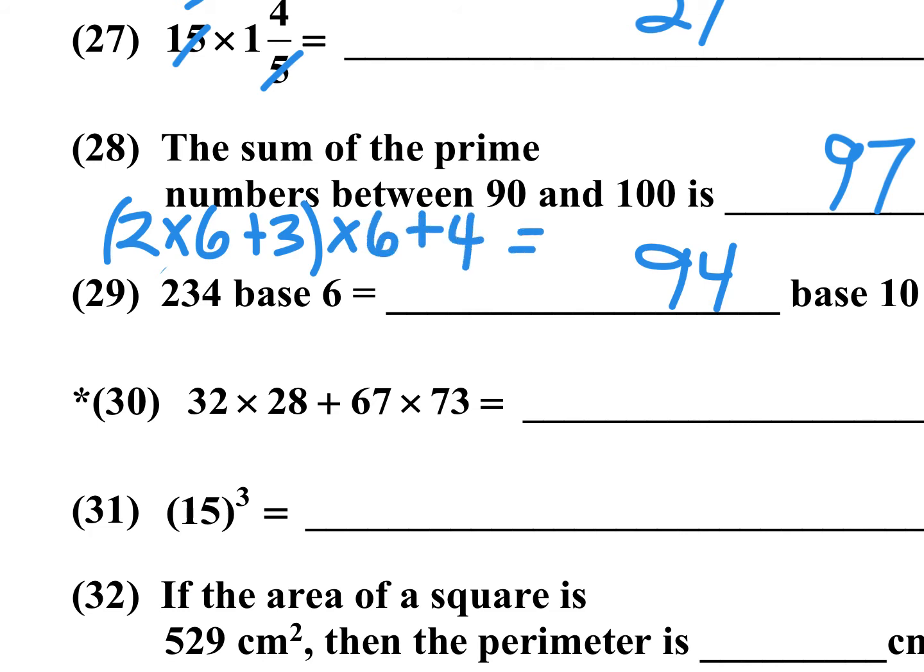2 times 6 is 12, plus 3 is 15. And then multiply it back times the base. 15 times 6 is 90, plus 4. So you multiply, add, multiply, add. So that's what you have to do when you see three digits. Multiply, add, multiply, add. And that's exactly what we did there.